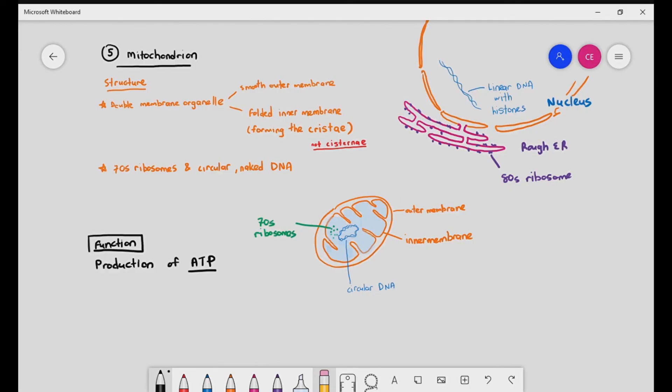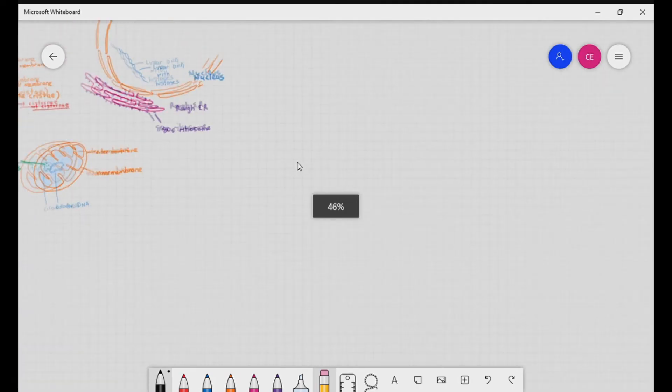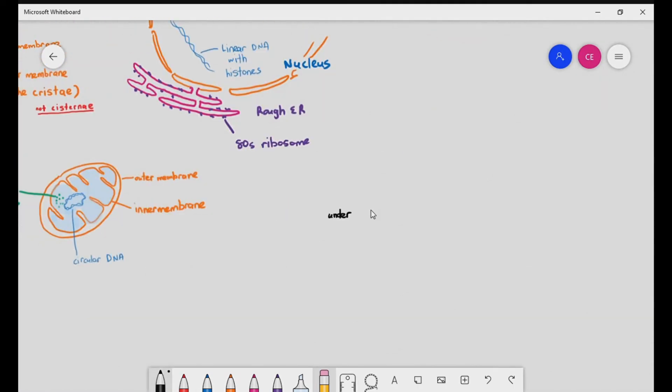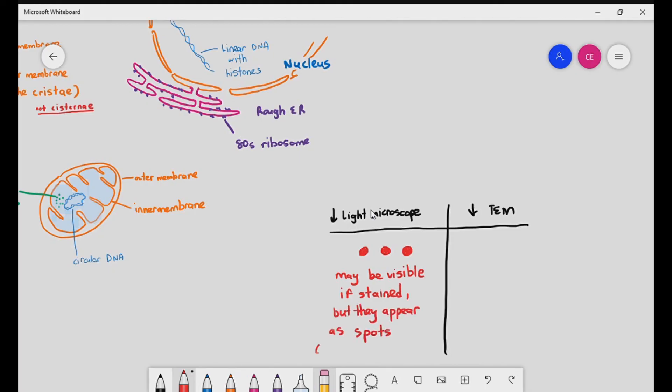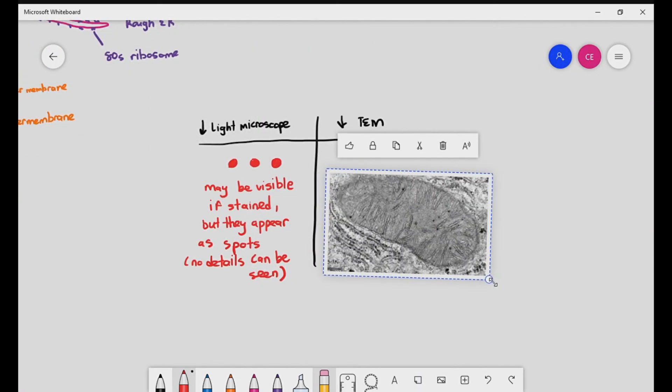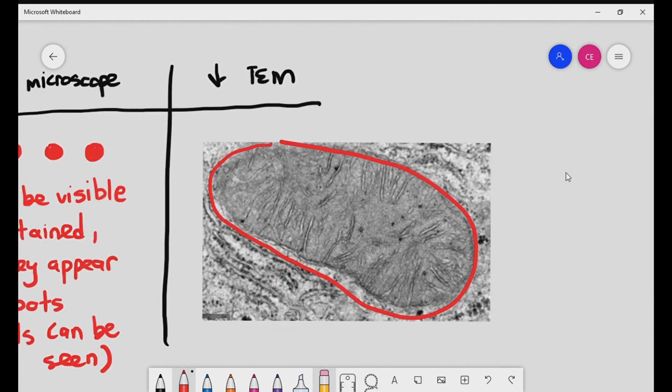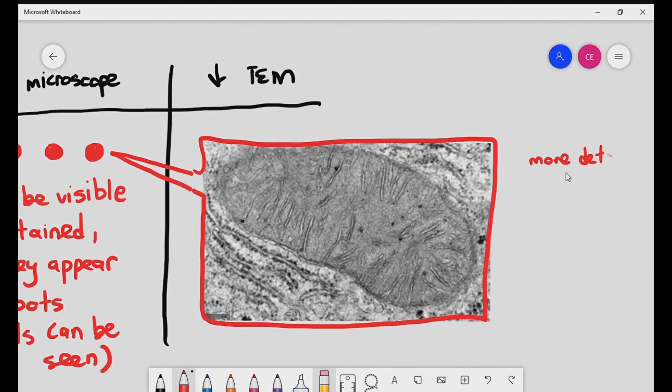How does the mitochondrion look like under the light microscope? Well, they may be visible if you stain them using special types of dyes, yet you will not be able to see any detail. You will just see the mitochondrion as a circular or oval thing. However, being viewed under the transmission electron microscope will yield a beautiful image such as this. You can see a more detailed image of the mitochondrion. That entire oval grayish material is one mitochondrion.